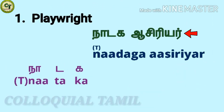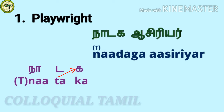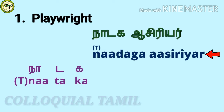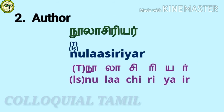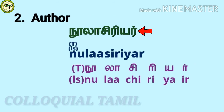For playwright, the Tamil term is naadaga asriya. You learned asriya in the part one video. For naadaga: naa is a long-sound letter, t is a short-sound letter — by speaking t, it may also sound as d in some words — and k is a short-sound letter that may also sound as g in some words. Together: naadaga. If you add the consonant m at the end of naadaga it becomes naadagam, which means drama. So for playwright: naadaga asriya.